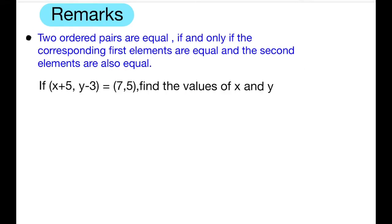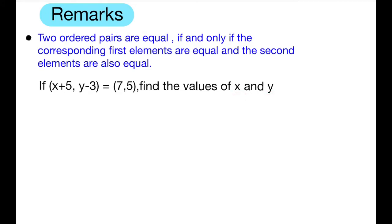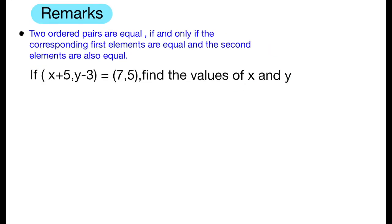Problem: If the ordered pair (x + y, y − 3) is equal to the ordered pair (7, 5), find the values of x and y. Since the ordered pairs are equal, x + y is equal to 7 and y − 3 is equal to 5.